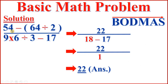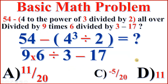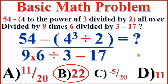Therefore, the answer for 54 minus parenthesis 4 to the power of 3 divided by 2, parenthesis, all over 9 times 6 divided by 3 minus 17, is 22. To solve this kind of mathematical operations problem, first we have to understand the order of operations, which is the BODMAS rule.